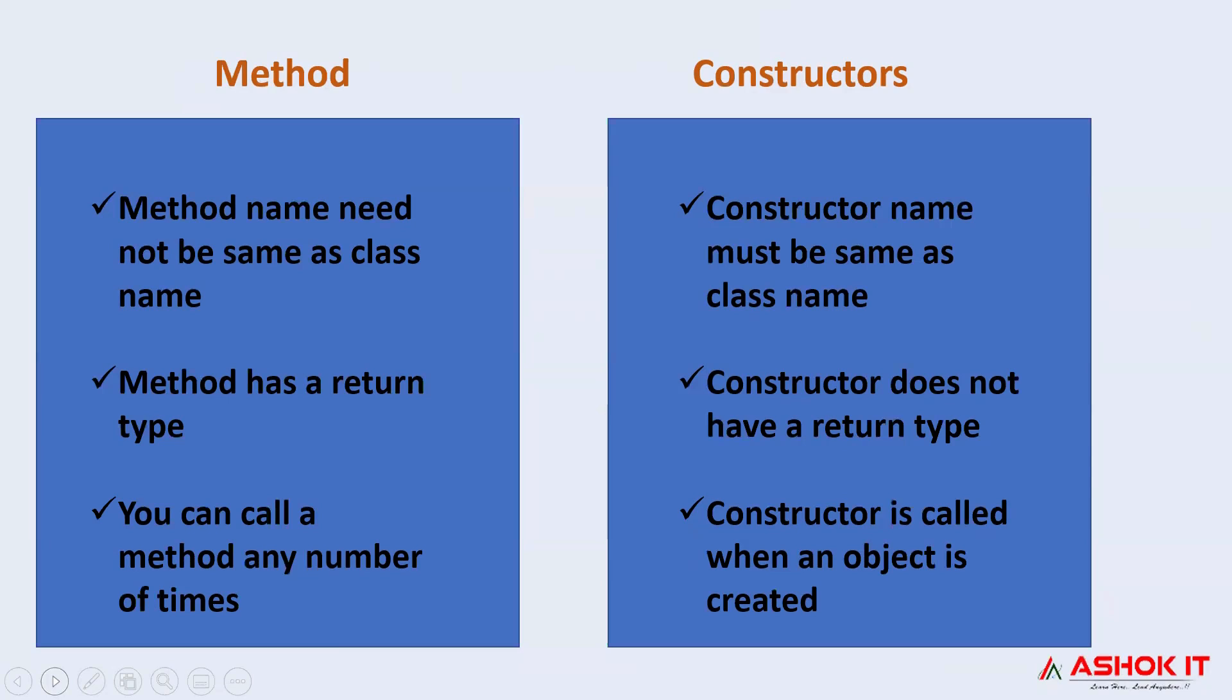Followed by that, we have the third and the last difference. You can call a method any number of times, but when it comes to constructor, the constructor can be called when an object is created. So with this, we can come to the end of this session.